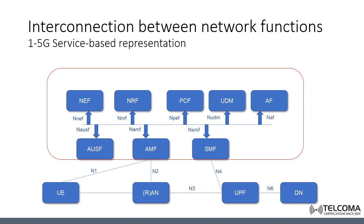The first method is a service-based representation, in which one network function — for example the AMF within the control plane — allows other network functions which have been authorized to access its services. This representation also includes point-to-point reference points between the network functions where necessary. The service-based architecture means a system architecture in which the system functionality is achieved by a set of network functions providing services to other authorized network functions.